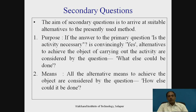All alternative means to achieve the objective are considered by the secondary question 'How else could it be done?' While the primary question was 'How is it done?', the secondary question asks 'How else can it be done?' This might refer to tooling-related improvements, fixture-related changes, combining operations, eliminating operations, or reducing the time required for the process by finding a better method through better means. The means may be related to the man, the machine, the equipment, or tooling.